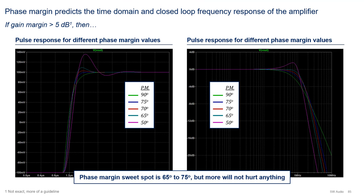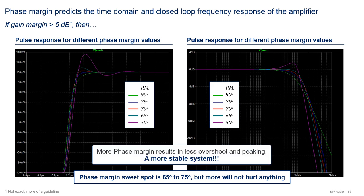The biggest advantage of phase margin is that it can be used to predict the time domain and closed loop frequency response of the amplifier. As the plots show, the amount of overshoot in the pulse response and peaking in the frequency response is inversely proportional to the phase margin. In other words, less phase margin implies or will cause more overshoot and peaking. In my experience, the phase margin sweet spot is between 75 and 65 degrees, where you barely get any overshoot and no peaking. More phase margin does not hurt though, but it is not optimal.